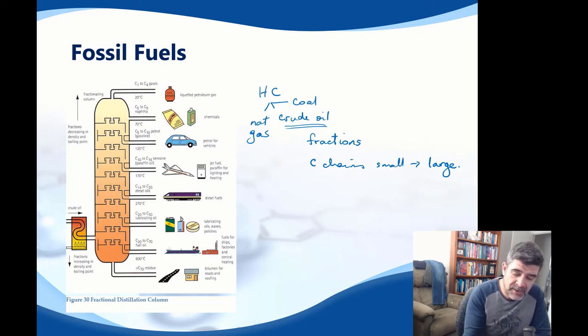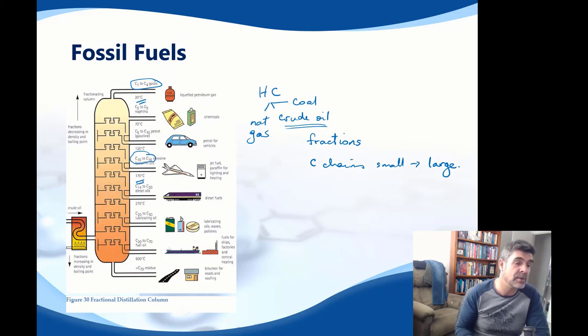You can see not only differences in the length of the chains as we move down this column, but also the temperatures associated with their appearance. This allows us to separate the fractions from crude oil and use them for a wide variety of uses.